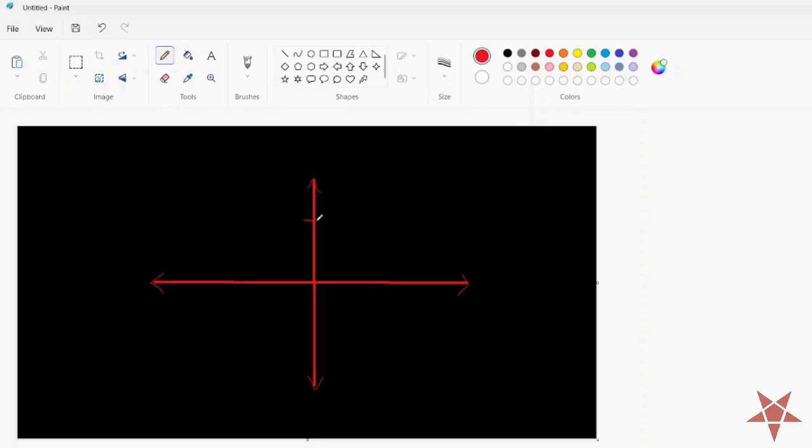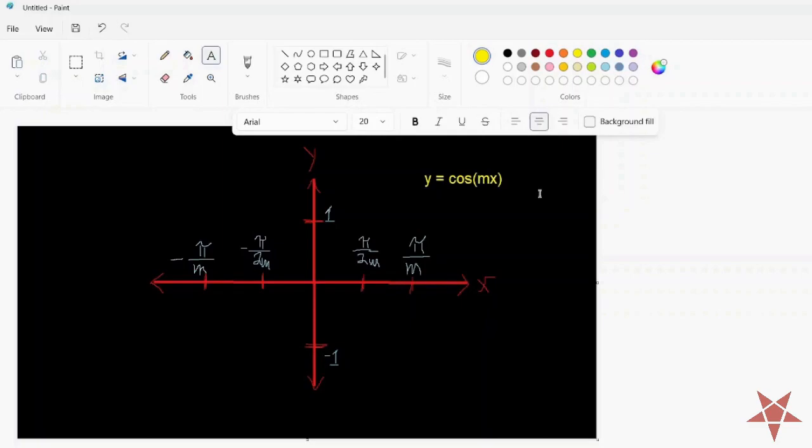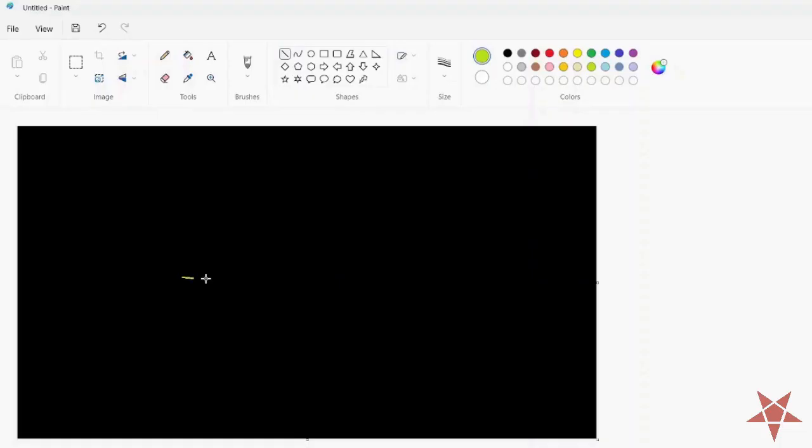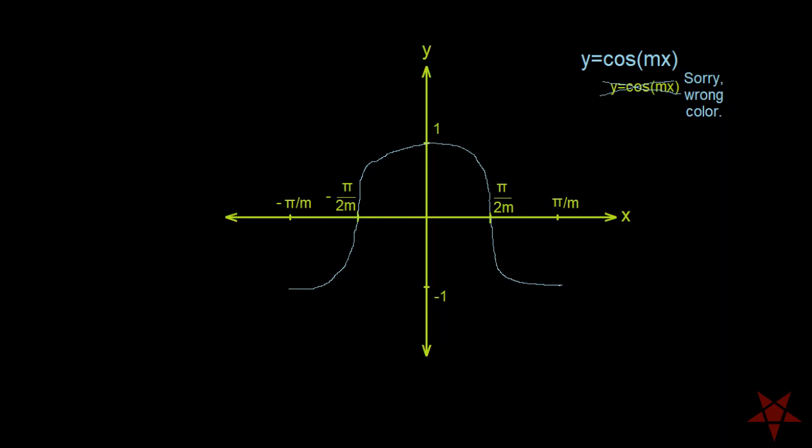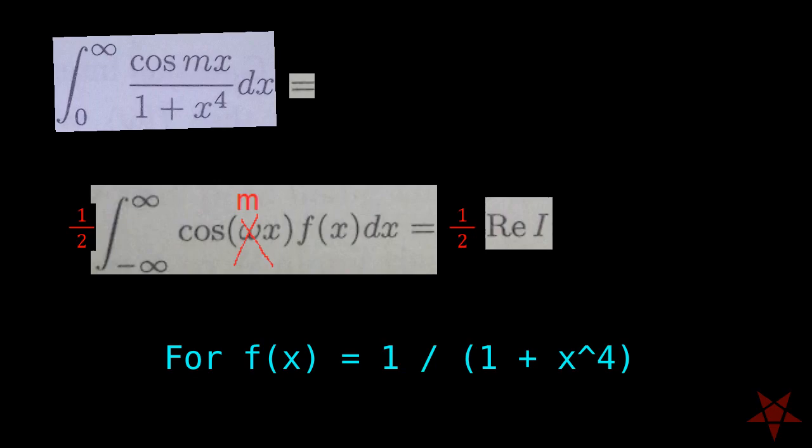Cosine of mx is an even function, as is 1 over 1 plus x to the 4th. The product of two even functions is itself even, and the integral on the right of the origin is equal to its equivalent on the left. Thus, our answer for exercise 5 works out to half of the integral that we're using from Part 3b, or half of the real component of the integral i.